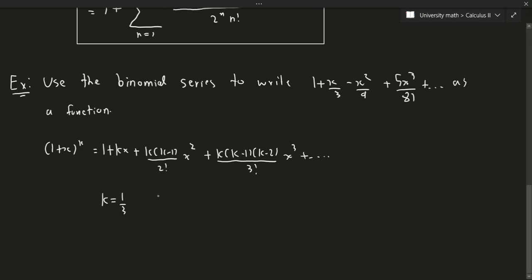So, from reading off the first term and confirming with k = 1/3, our function f(x) is simply (1 + x) to the power of 1/3. We can compare coefficients to identify the function, and that covers this example and the binomial series video.